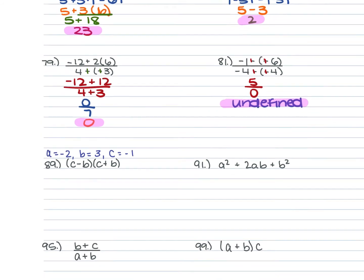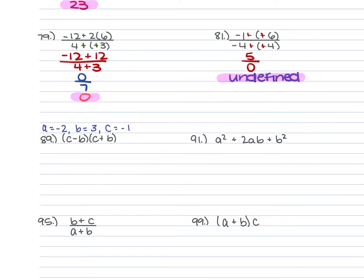For the next set, use A = −2, B = 3, and C = −1. For 89, we have (C − B)(C + B). Plugging in: (−1 − 3)(−1 + 3) = (−4)(2) = −8.